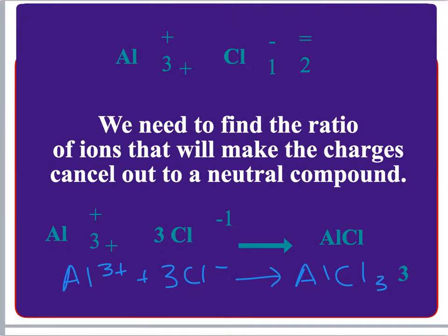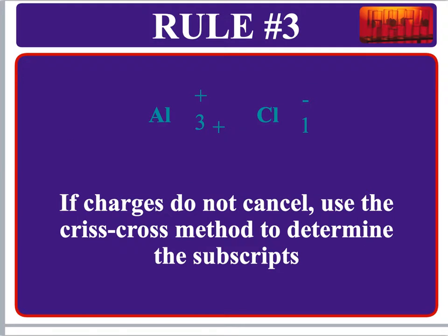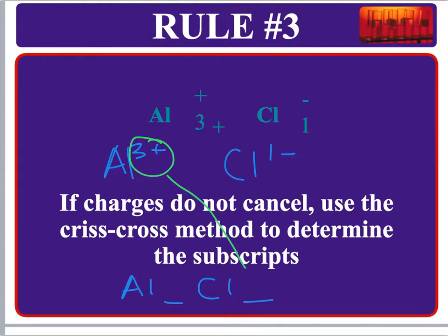We can also use the crisscross method as a shortcut. You simply take the charge number from one ion and write it as the subscript for the other. So aluminum's 3 goes to chlorine's subscript and chlorine's 1 goes to aluminum's subscript — giving AlCl₃. Note: chemists were lazy, so we never write a subscript of 1. The crisscross method just means switching those charge numbers to determine the number of atoms needed.